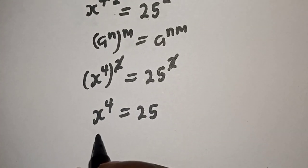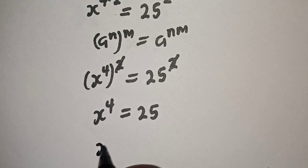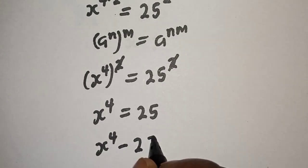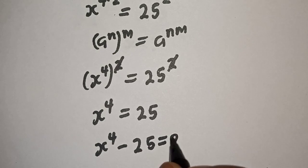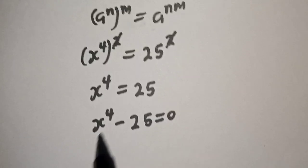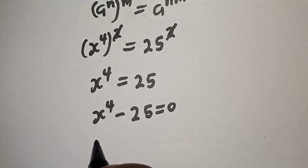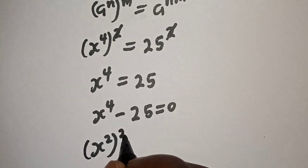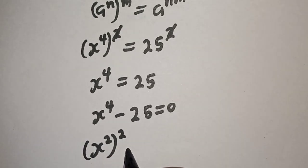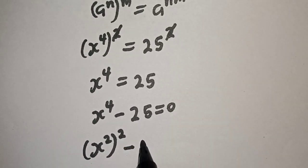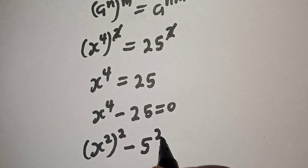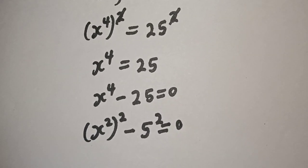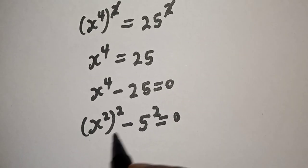Let's bring this to this side. This gives us s raised to power 4 minus 25 is equal to 0. Now, s raised to power 4 can also be written as s square raised to power 2, and minus 25 can be written as minus 5 square. This is equal to 0, and this is a difference of two squares.